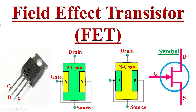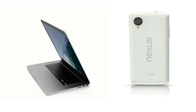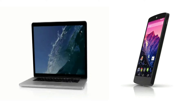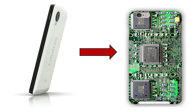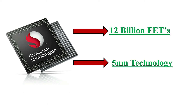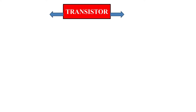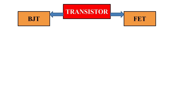Hello friends, welcome to the YouTube channel Electronics. In this video we will learn about FET, field effect transistor. Electronic devices have made our lives convenient and faster. This miraculous speed is because of the processor inside them. These processors have nearly 12 billion transistors. Transistors are mainly two types: bipolar junction transistor and field effect transistor.